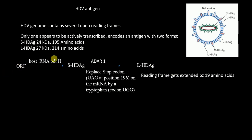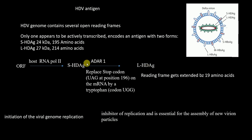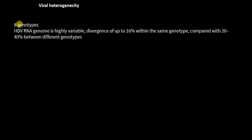To summarize, host RNA polymerase II acts on the ORF to produce small HDAg, and with the help of ADAR1 enzyme the stop codon at position 196 is replaced by a tryptophan codon, extending the reading frame by 19 amino acids to produce large HDAg. The function of small HDAg is to initiate viral genome replication, whereas large HDAg is an inhibitor of replication and is essential for the assembly of new viral particles.